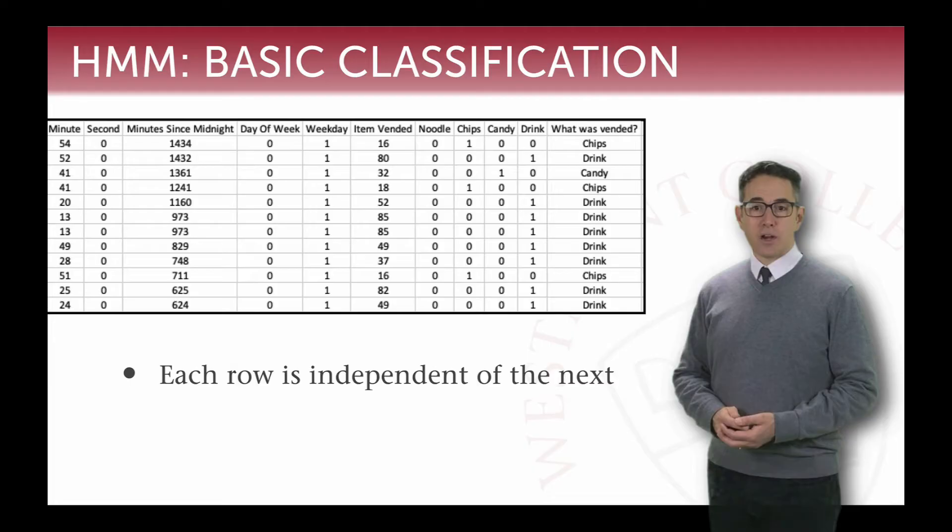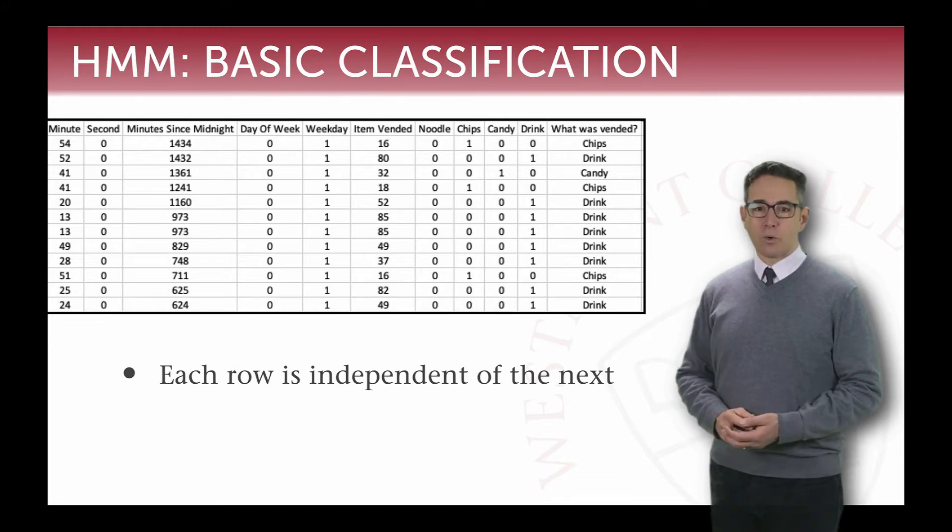For example, a decision tree doesn't matter what row you put the data in. Linear regression doesn't matter which row you put the data set in. K-nearest neighbor doesn't matter which order the rows are in. Each row is independent of the next one. The data that is in one row doesn't have any information to provide to the data of the next row.